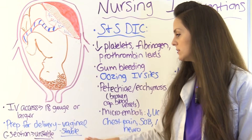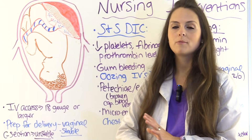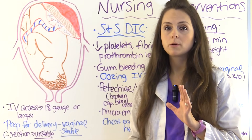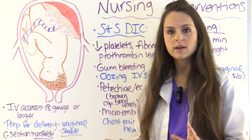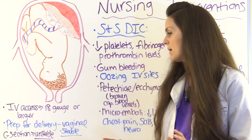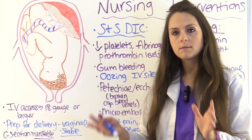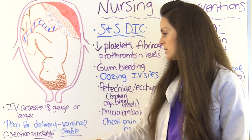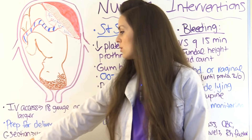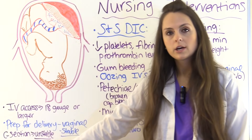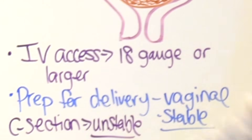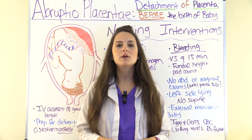Prepare for delivery. Depending on where the woman is in her pregnancy, the treatment approach will vary. If both mom and baby are stable, vaginal delivery may be possible. However, if mom or baby is unstable, an emergency C-section will be performed.